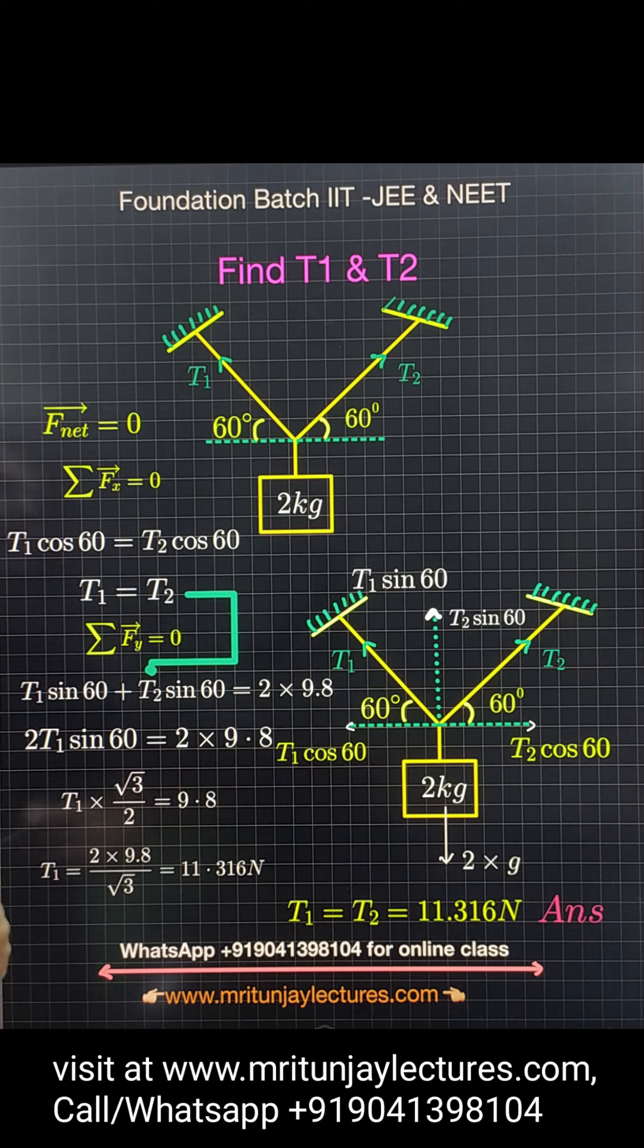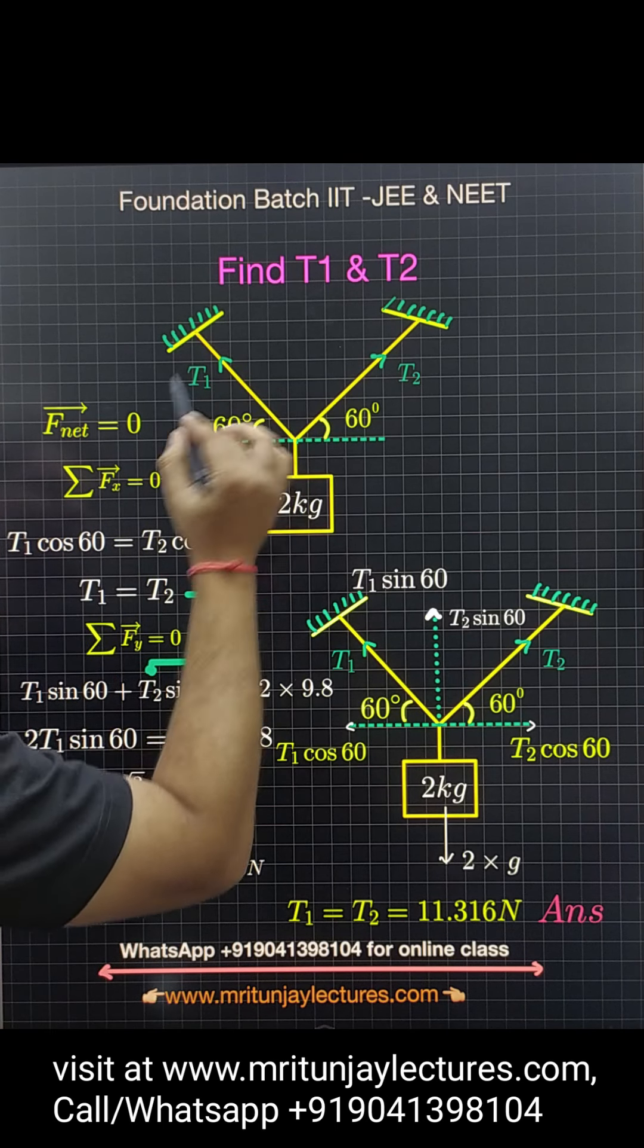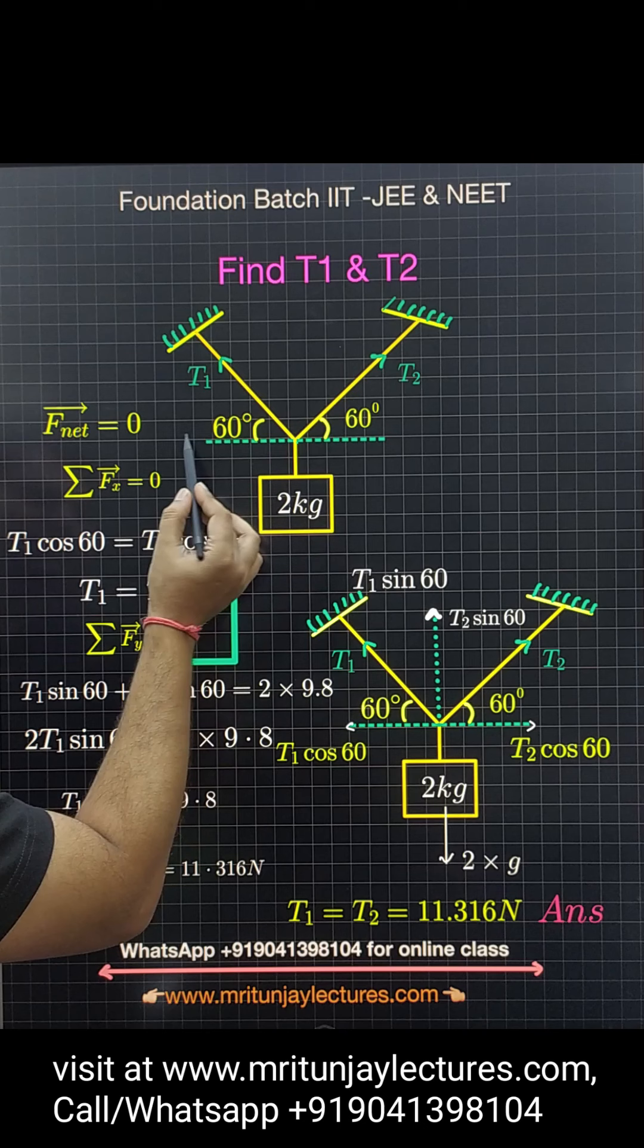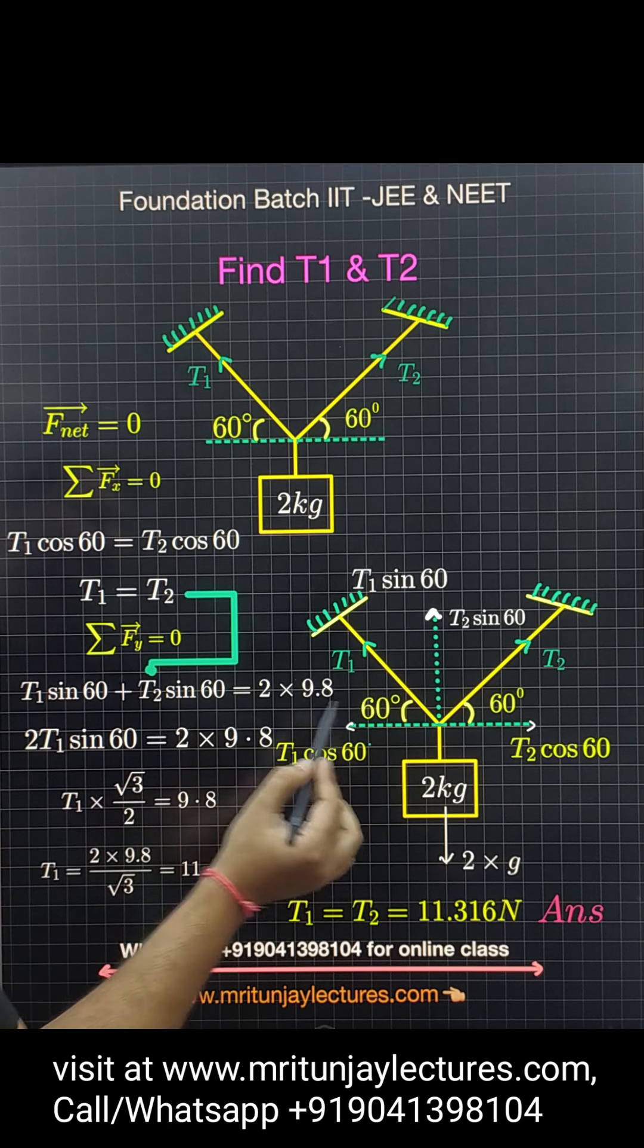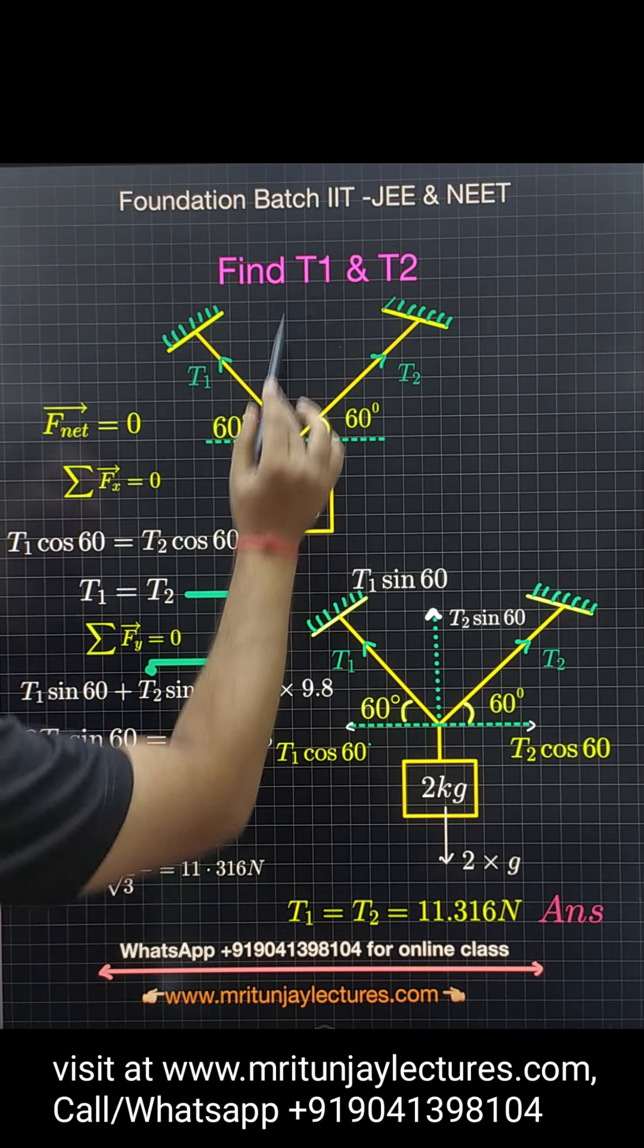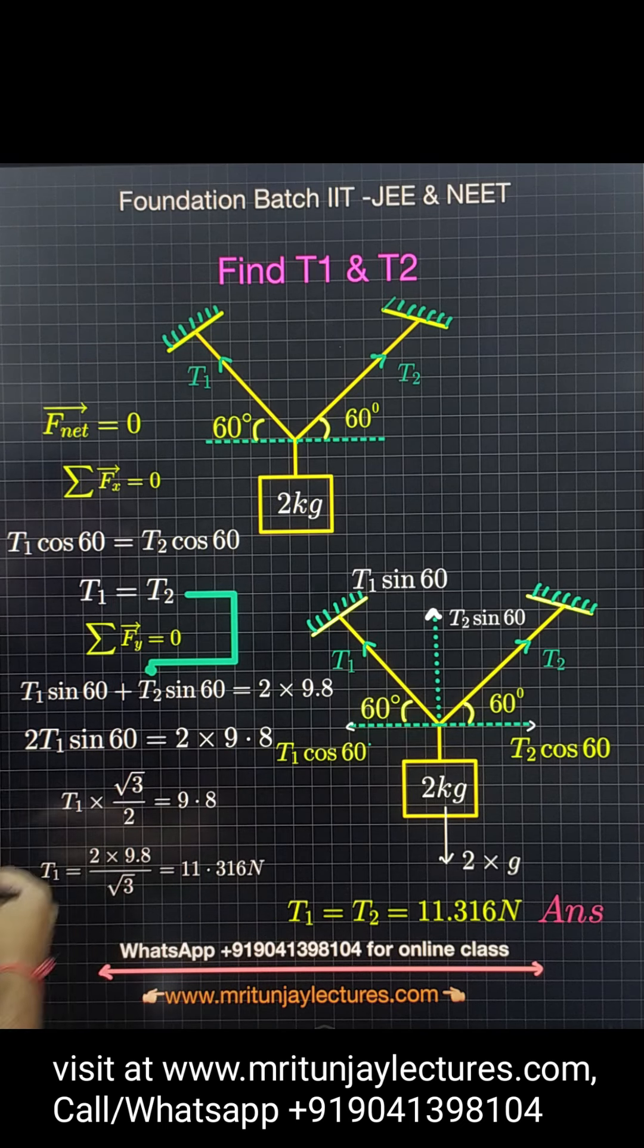you can say that the algebraic sum of x components equals zero and the algebraic sum of y components also equals zero. At that point, we have T1 here and T2 here. The component of T1 along this direction is T1 cos 60 degrees, and the component of T1 along the y-axis